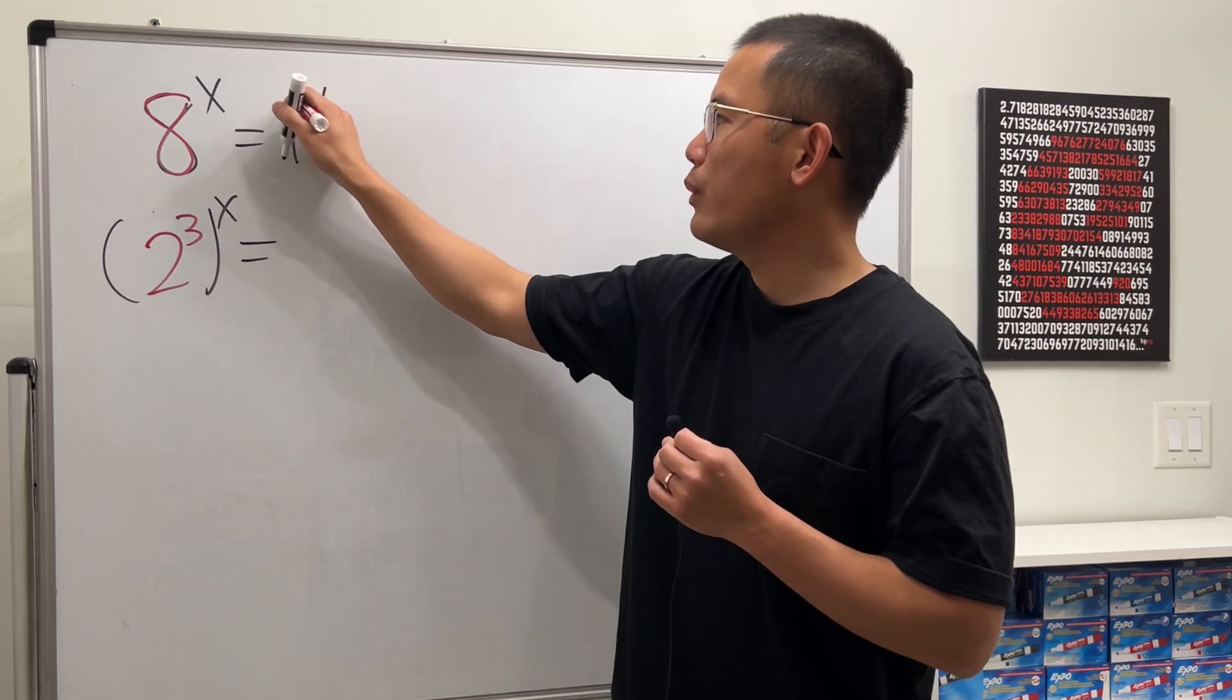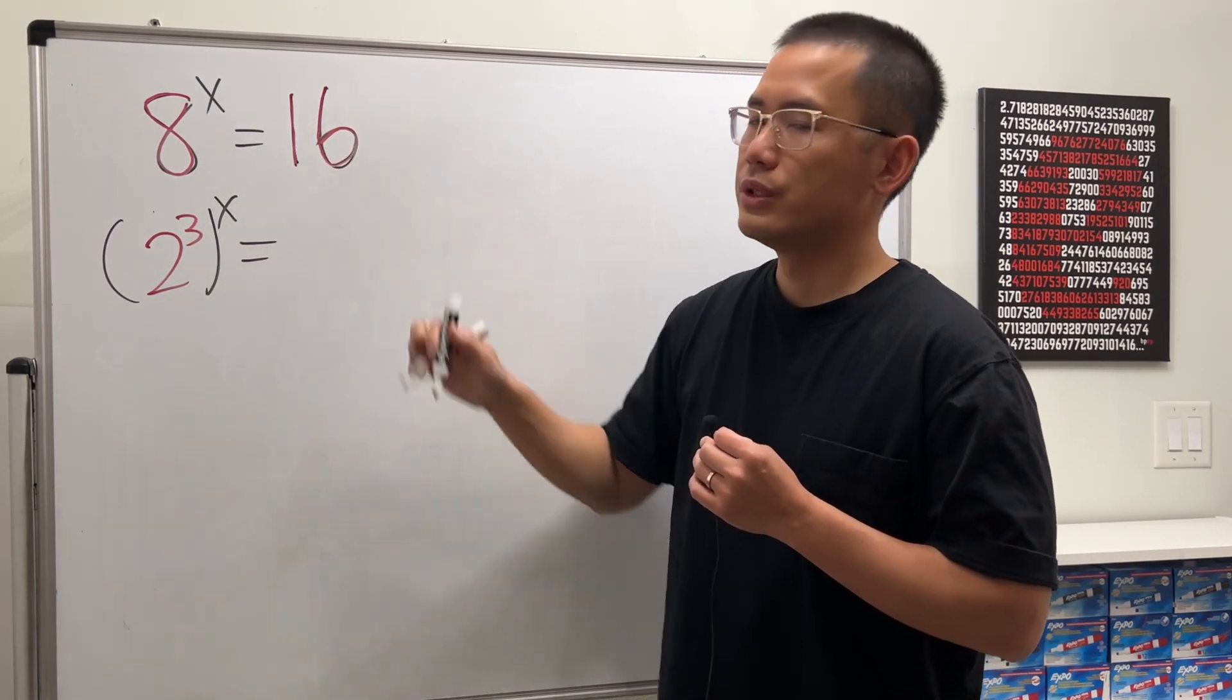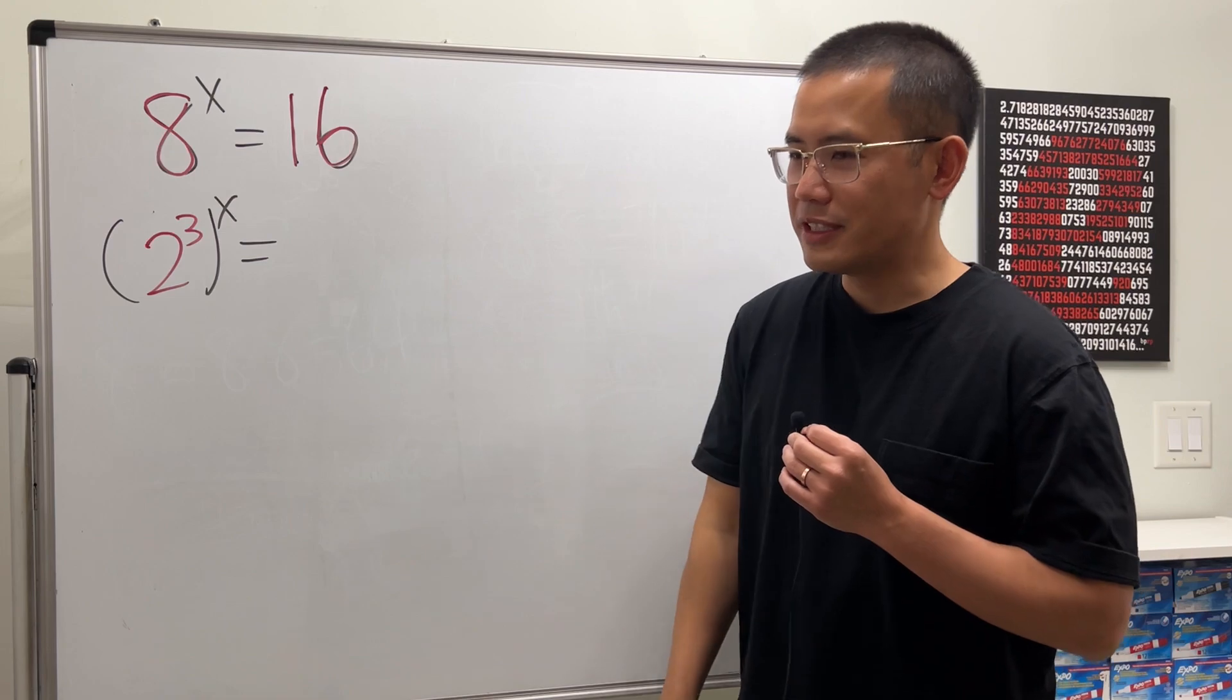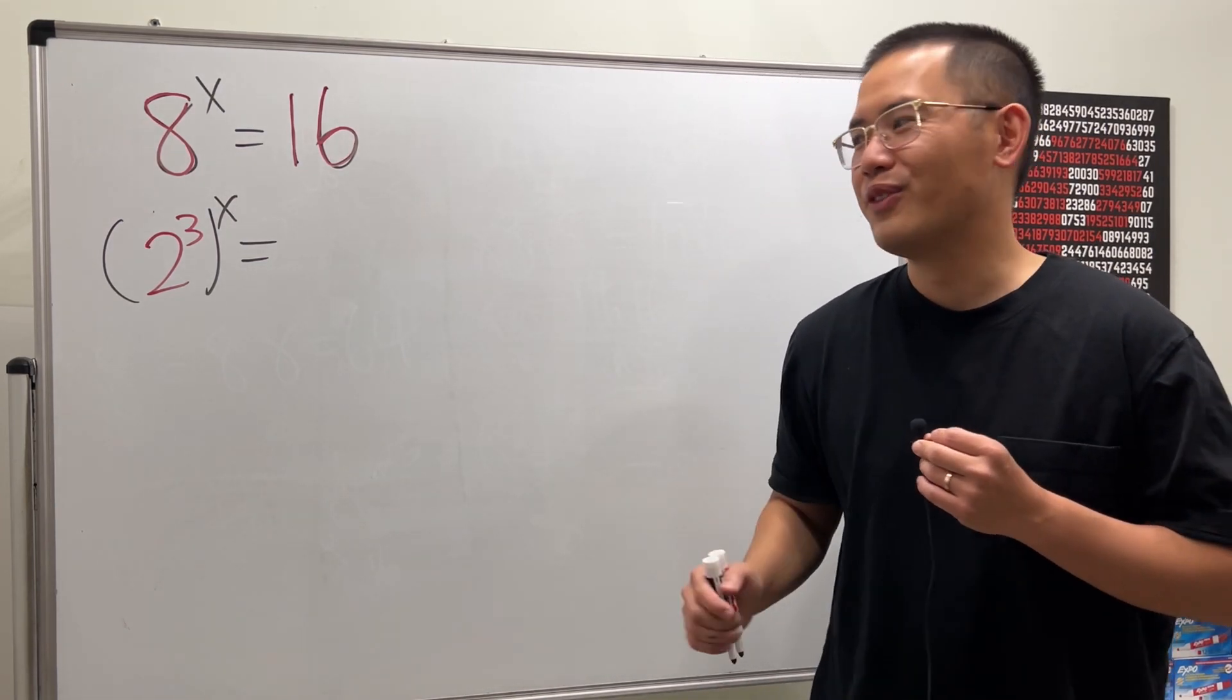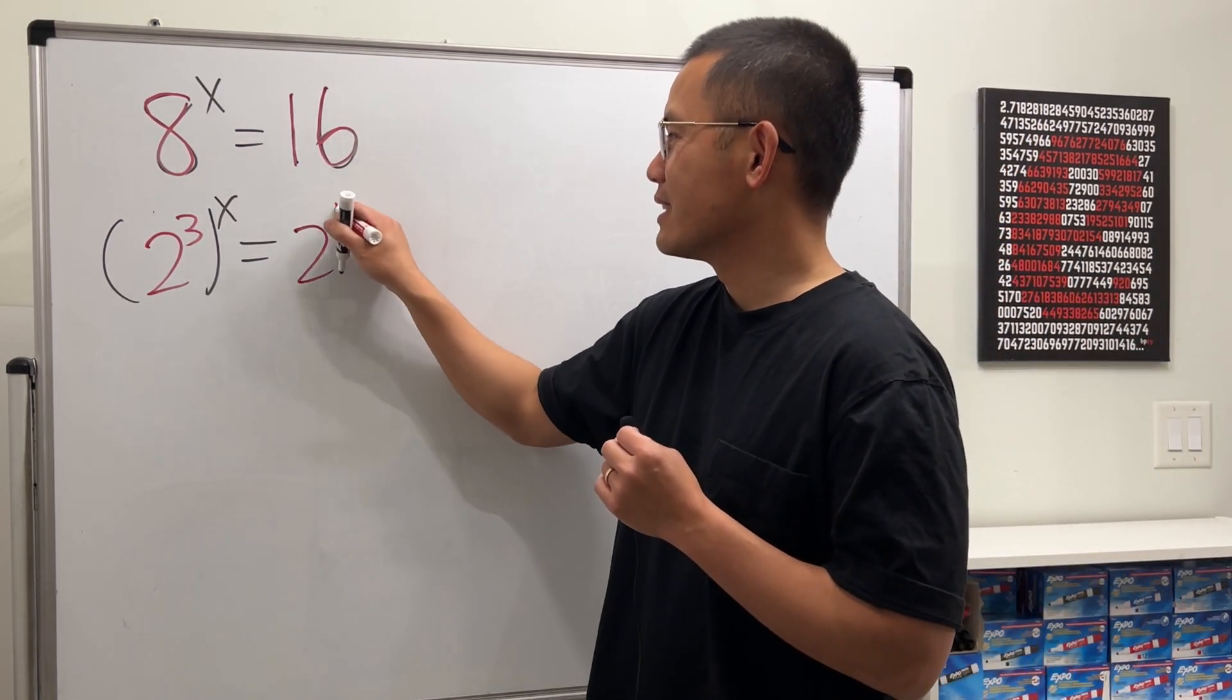Now, for the 16, can we also make it with base 2? Yes, because 16 is the same as 2 times 2 times 2 times 2, which is 2 to the fourth power. That's very nice.